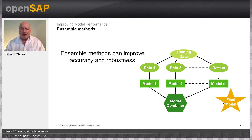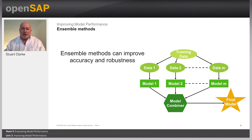Ensemble methods, examined earlier in this course, use multiple learning algorithms to obtain better predictive performance than could be obtained from any of the constituent learning algorithms alone. The ensemble result is also more robust. In general, numeric target variables are averaged across multiple executions of an algorithm, whilst categorical target variables have a voting system — usually run an odd number of times to avoid draws.